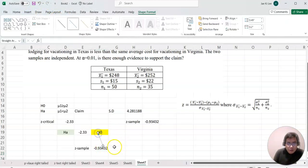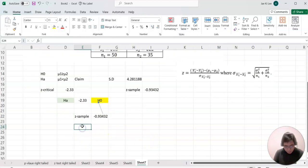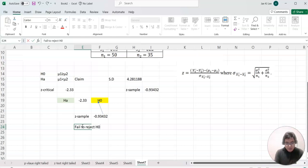Where does this value belong to? Is it in HA or H0? Yes, it belongs to H0 because this value is bigger than negative 2.33. Since z sample value belongs to H0, we cannot reject H0. We fail to reject H0.